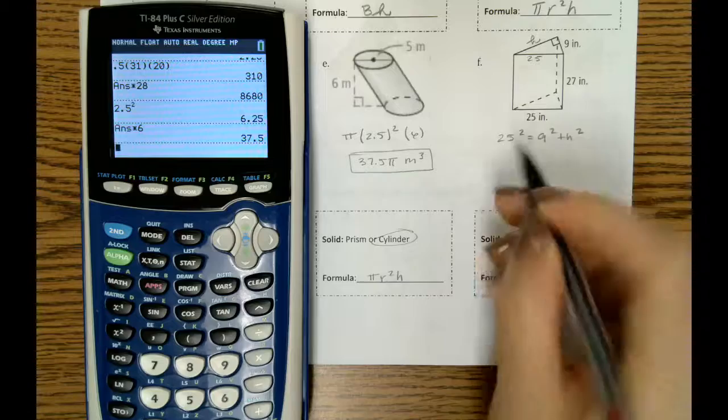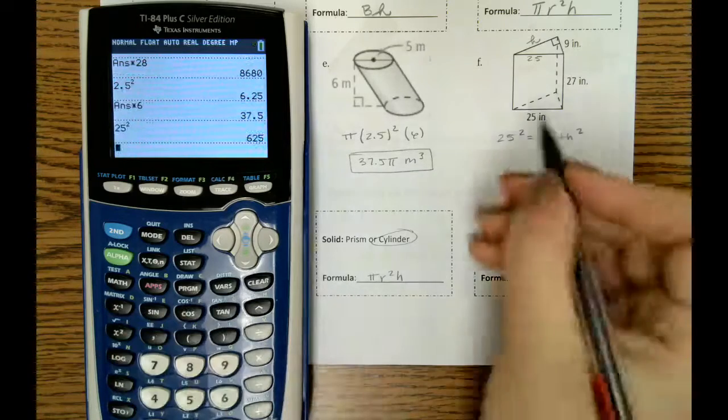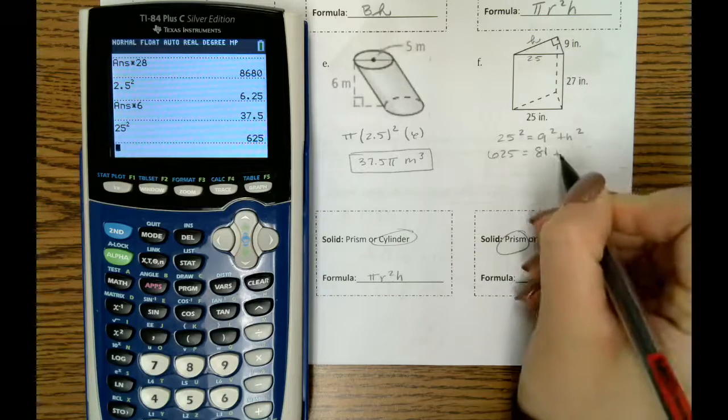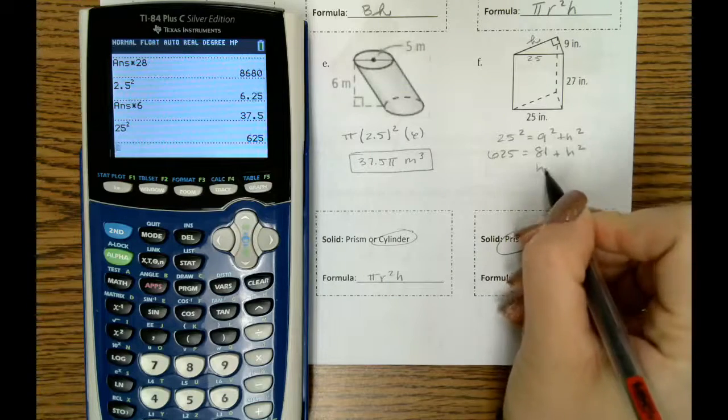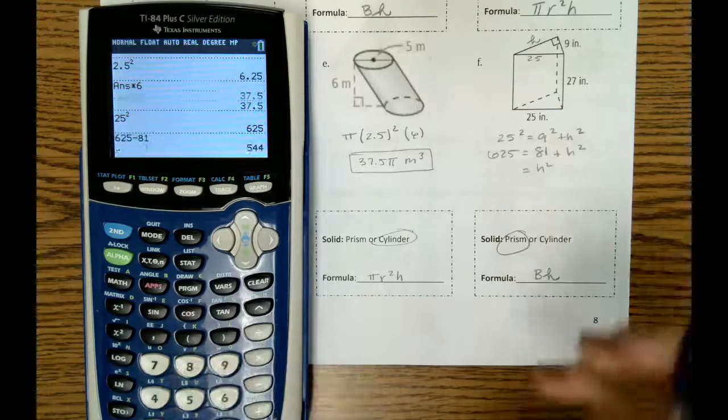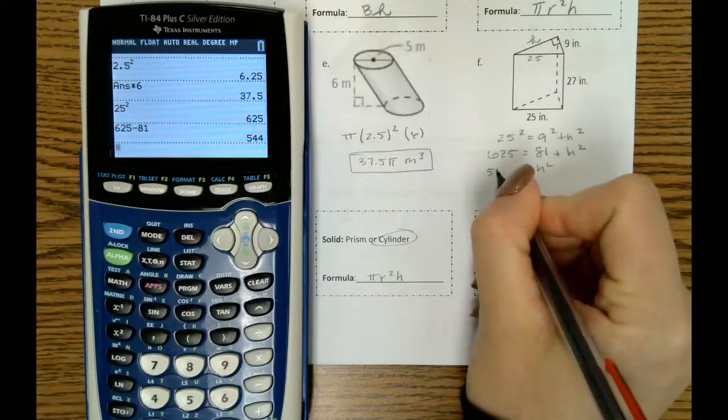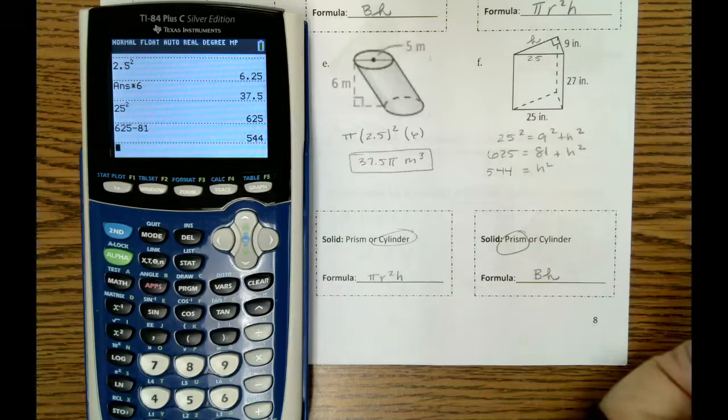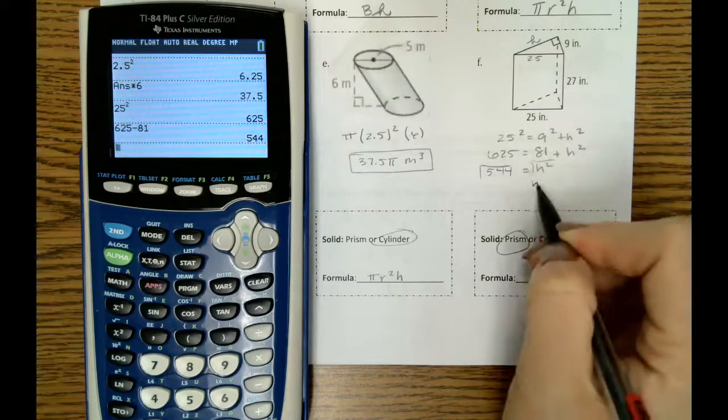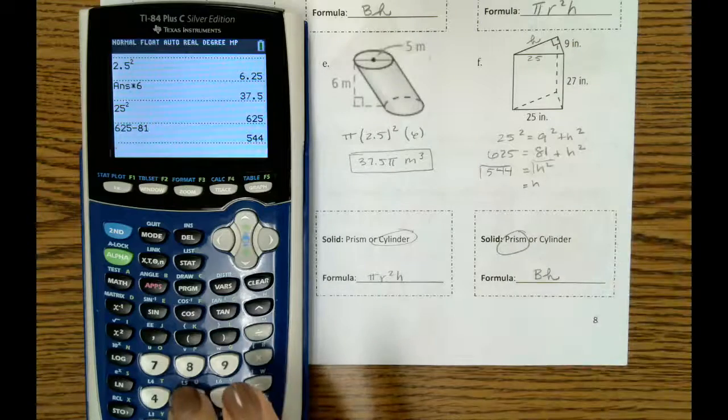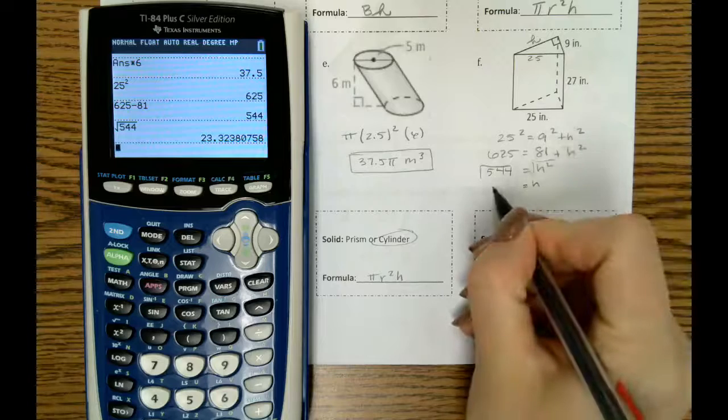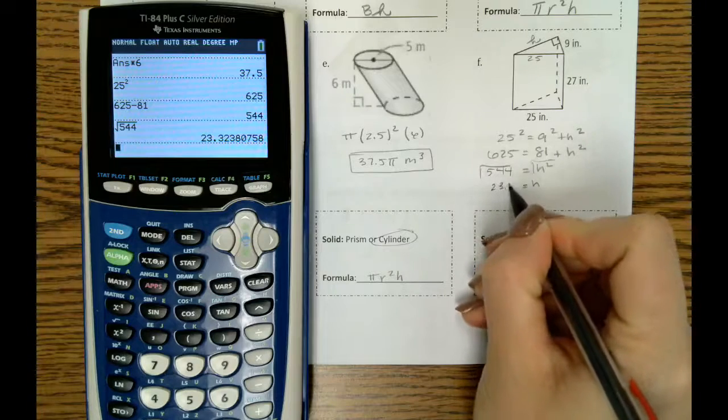So 25 squared is 625. 9 squared is 81. We're going to subtract 81 from 625. We get 544. And then we'll take our square root, of course. So that gets us a height of 23.32.